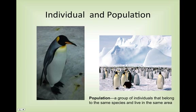This population interacts, lives together, and breeds together. So a population is a group of individuals that belong to the same species and live in the same area. If there were to be a polar bear with these penguins — and of course that wouldn't happen, because polar bears are in the North Pole and penguins are in the South Pole — the polar bear would not be part of our population. The population is only individuals of the same species.